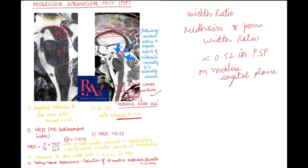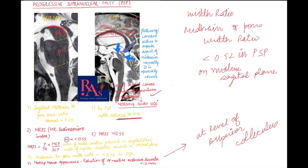The Mickey Mouse appearance is another radiological sign, referring to a reduction of the AP midline midbrain diameter to less than 12 mm. This measurement is calculated at the level of the superior colliculus.